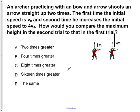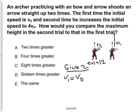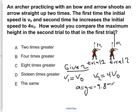We're going to first write down our given information. V-naught equals V-naught — that's the initial velocity of trial one, where the archer shoots the arrow up at a speed of V-naught. For trial two, V-naught is equal to four times V-naught. For both cases, acceleration due to gravity is negative 9.8 meters per second squared, and when they reach maximum height, the final velocity is zero meters per second.